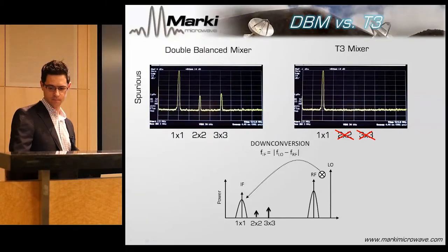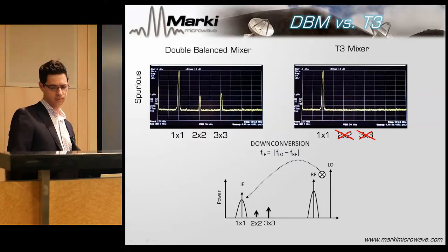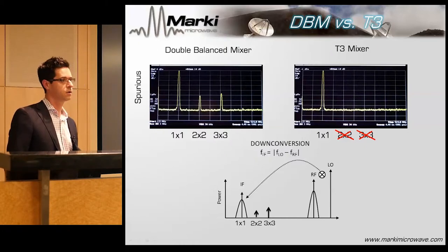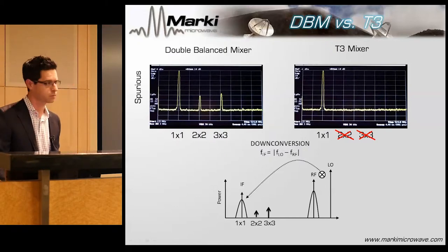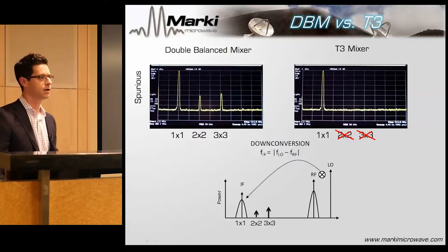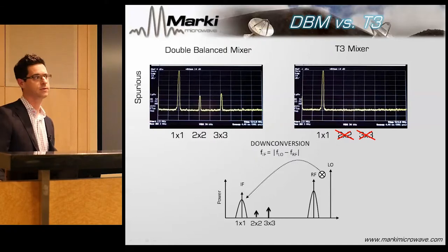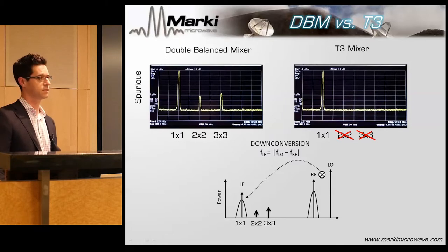The two-tone performance is very good, but what about single-tone? It's also very good because it's a switching mixer — we don't get the intermod products, so we should have better 2×2 and 2×1 spurs, and indeed this is the case. In a down-conversion example, a regular double-balanced mixer shows a 2×2 spur on the order of 50 to 60 dBc — maybe 70 if you're really lucky. But the T3 is down at 80, 90, or 100 dBc at the exact same frequency.